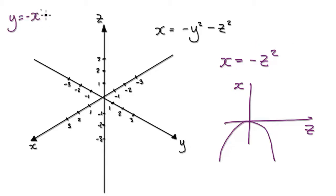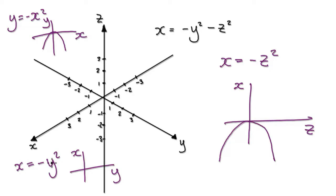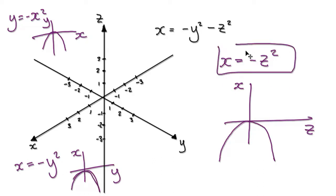Just like y equals negative x squared, which you can sketch easily, or x equals negative y squared, which you draw with x and y axes — when you get given x equals negative z squared, you can draw this in your mind.